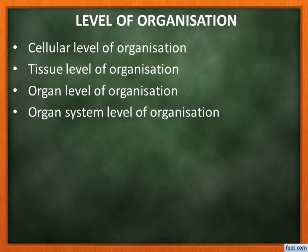Level of organization: living things are made up of cells. Kingdom Animalia consists of only multicellular organisms. As per how these cells are organized or arranged, organisms are classified. The classifications are: cellular level of organization, tissue level of organization, organ level of organization, and organ system level of organization.